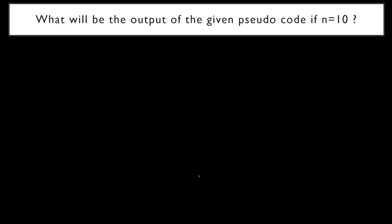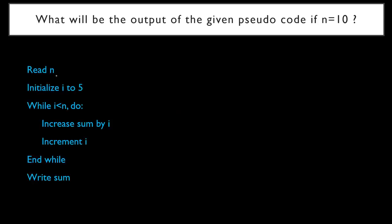The third question: What will be the output of the given pseudocode if N equals 10? The pseudocode is: Read N. Initialize I to 5. While I is less than N, do: increase sum by I, increment I. End while. Write sum. Options are A) 35, B) 25, C) 45, D) 55.